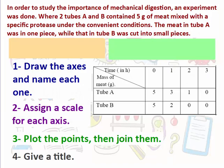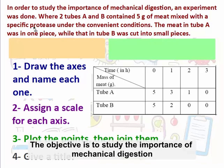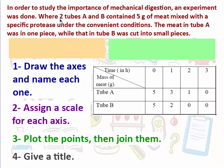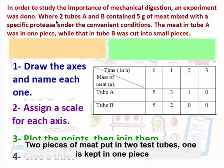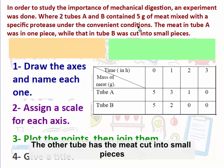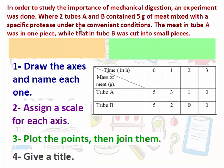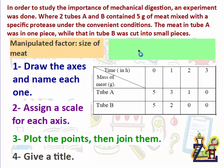Now another example: in order to study the importance of mechanical digestion, an experiment was done where two tubes A and B each contained five grams of meat mixed with a specific protease under convenient conditions. The meat in tube A was in one piece, while that in tube B was cut into small pieces. The manipulated factor is the size of the meat, and the measured factor is the mass of the meat.